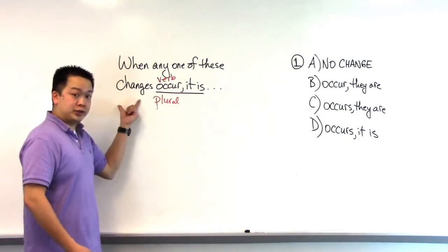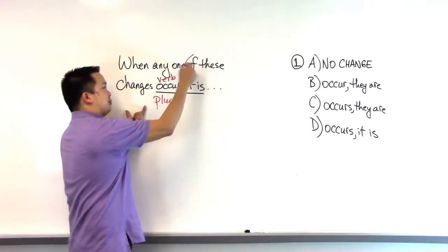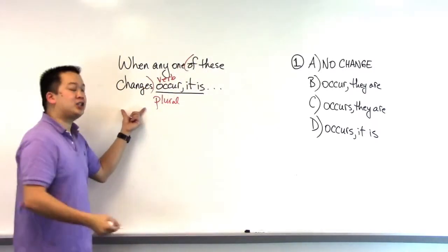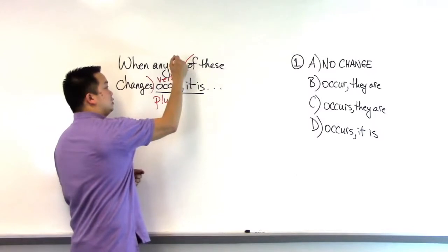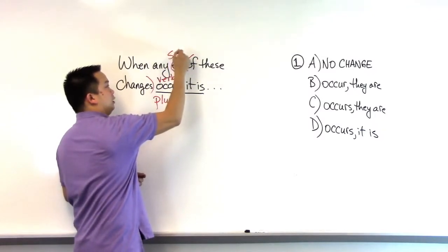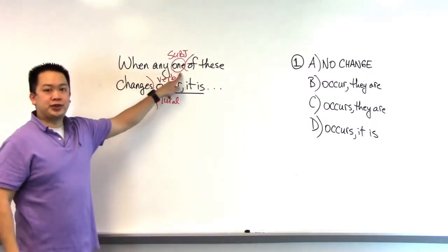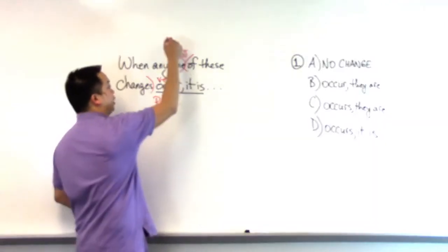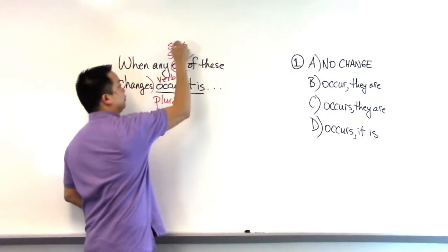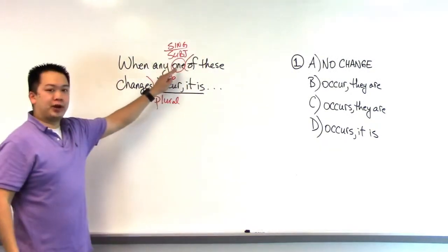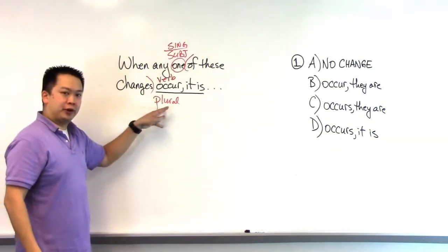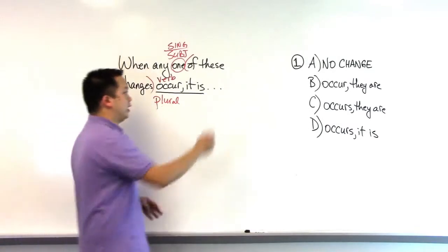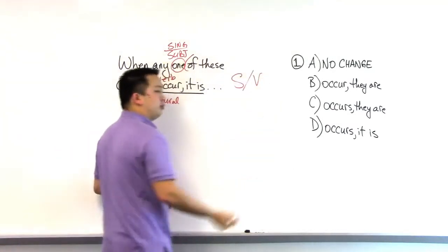We might think of this changes, but changes is part of this prepositional phrase. And so the actual subject of this sentence is one. And so we then ask ourselves, is one singular or plural? And one is certainly indeed a singular pronoun. So if this is a singular pronoun with a plural verb, they do not agree. And this would be a subject verb agreement issue.